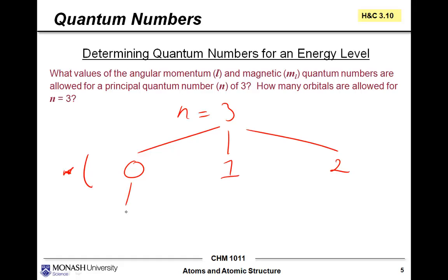In this case here, l equals 0, so ml can also only equal 0. In this case, ml can equal minus 1, 0, or plus 1. In this case here, ml can take on values anywhere from minus 2 to minus 1, 0, plus 1, plus 2.